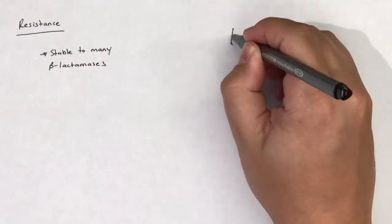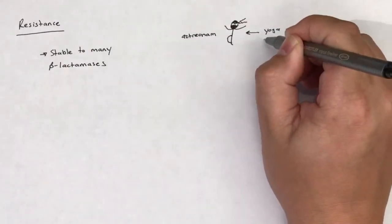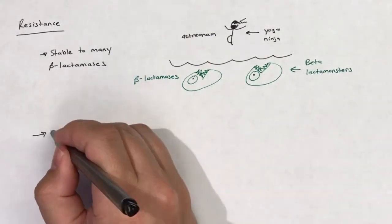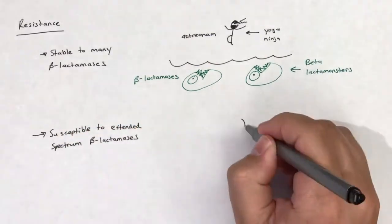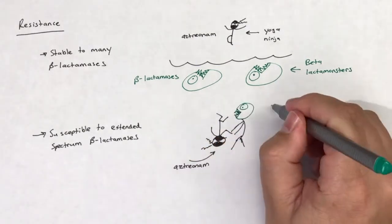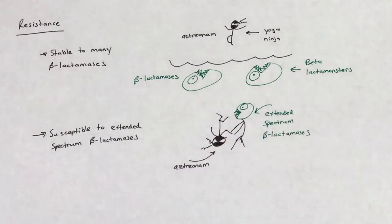Aztreonam is stable to many beta-lactamases, including the narrow-spectrum beta-lactamases that are commonly used by gram-negative bacteria. The exception is that aztreonam is still susceptible to some extended-spectrum beta-lactamases, because at the end of the day, aztreonam still has a beta-lactam ring.